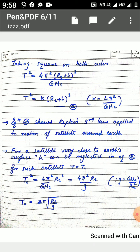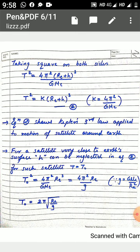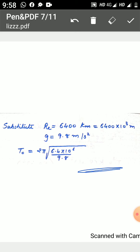Removing the square from T₀² requires taking the square root, giving T₀ equals 2π times the square root of (R_e divided by g). Now you can substitute the known constant values — the radius of Earth and g — simplify, and calculate the numeric value of the periodic time of a satellite revolving very near to Earth's surface.